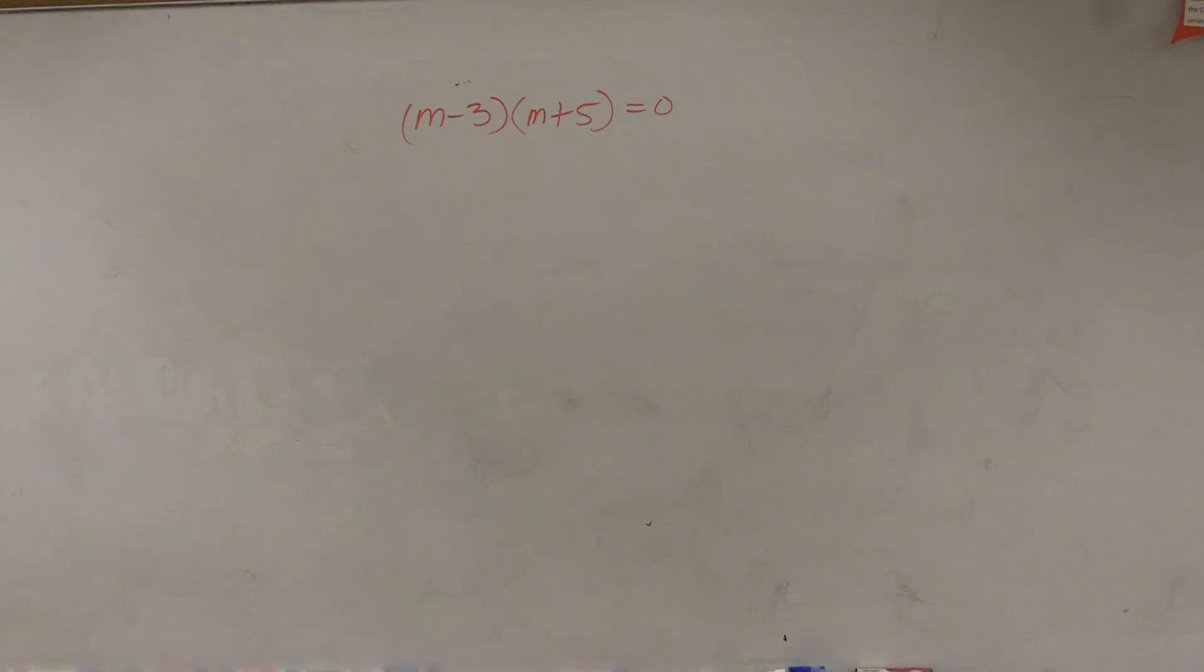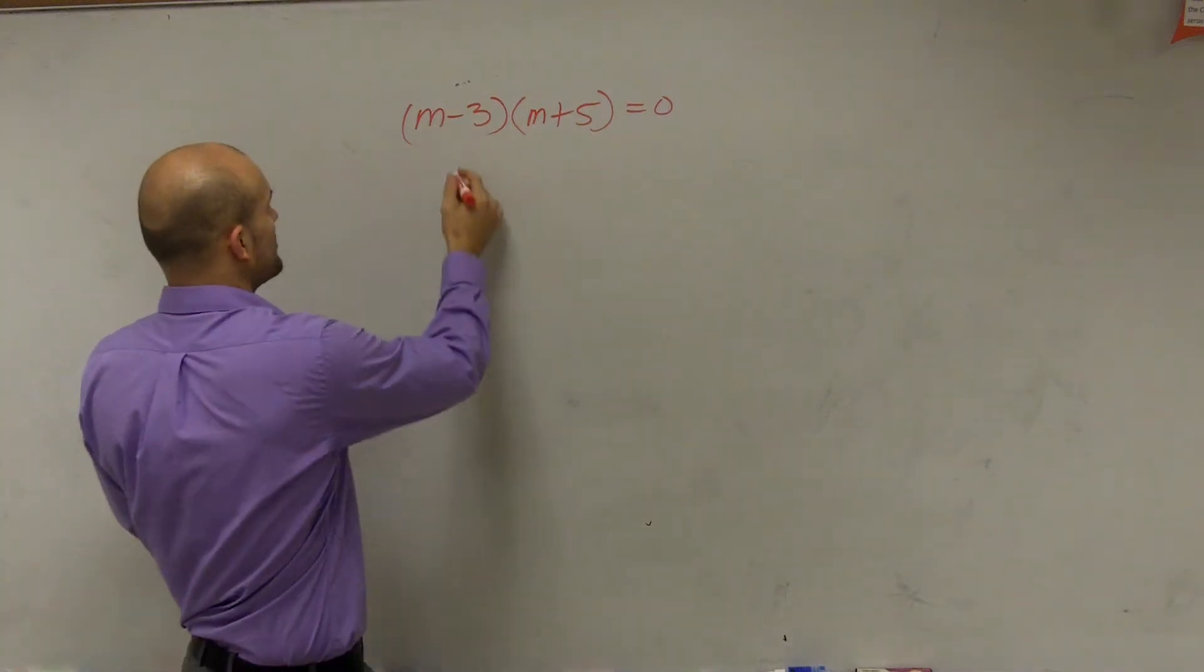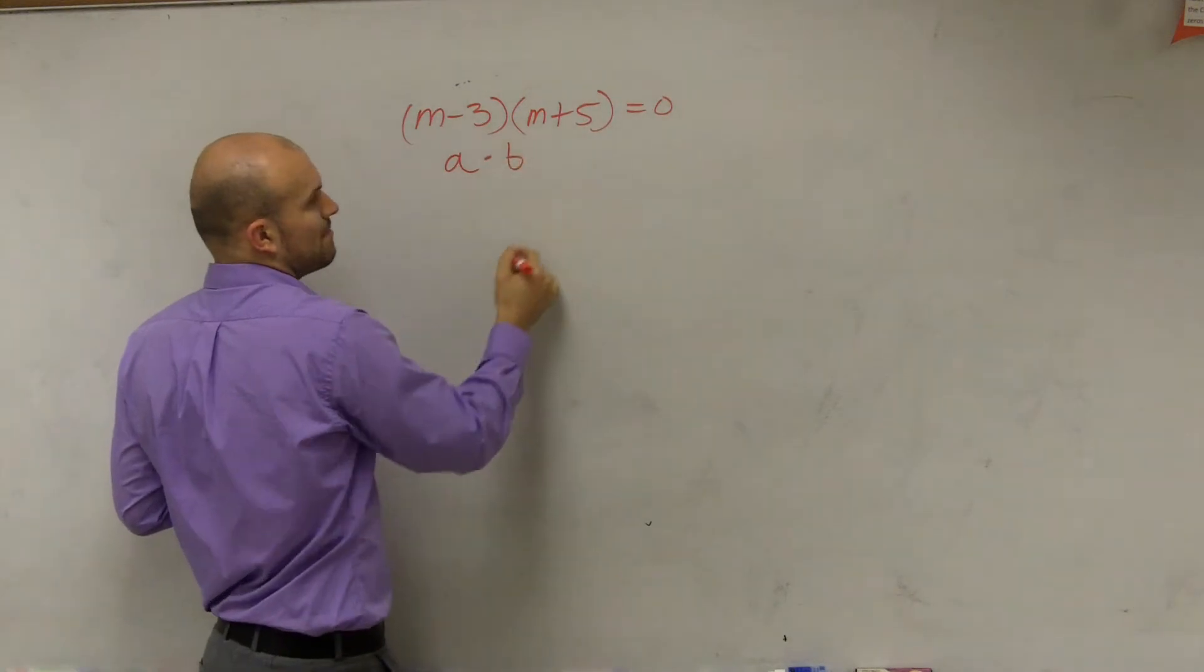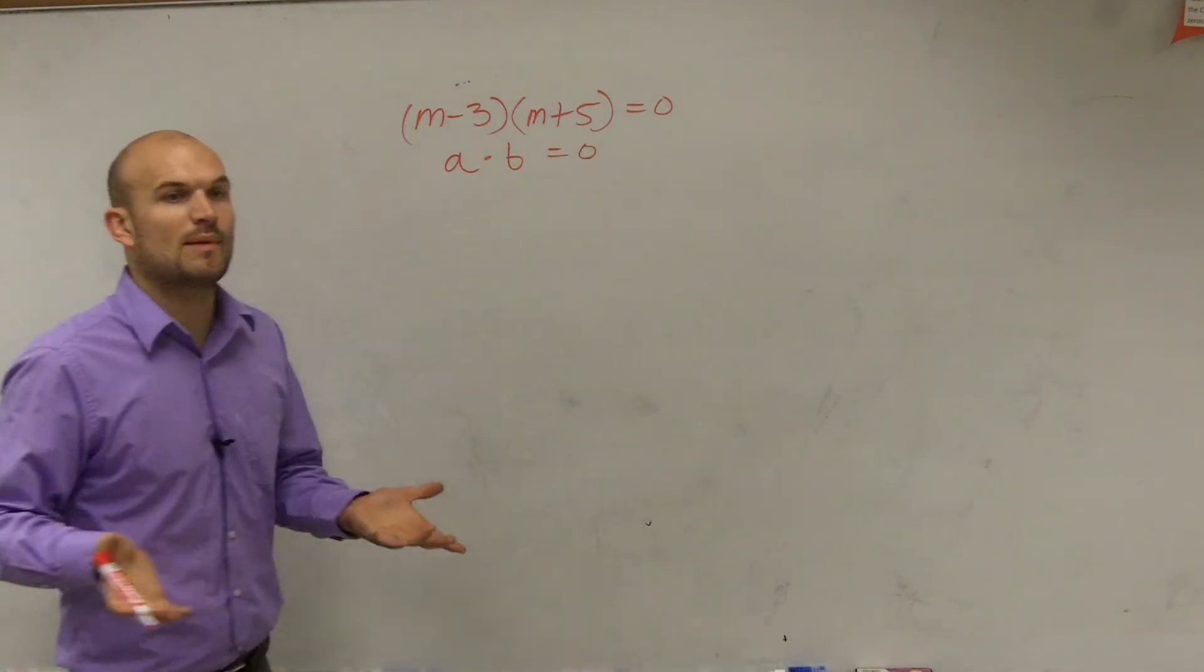So remember the zero product property states if you have two numbers that multiply to give you zero, one of them has to equal zero.